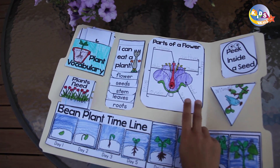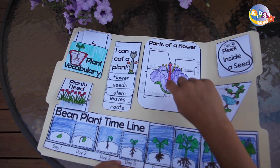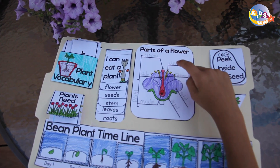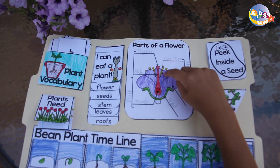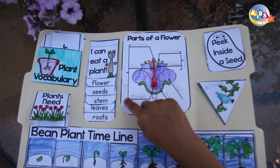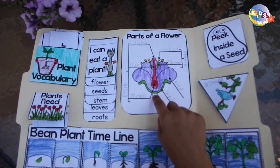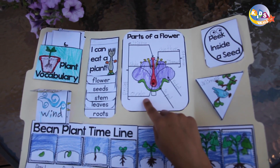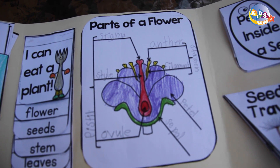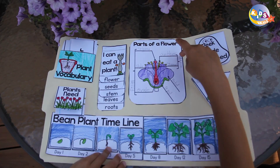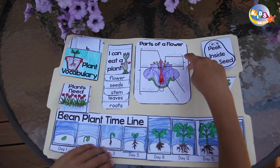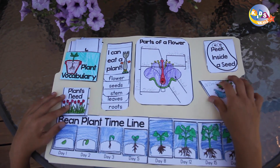Beside that, there's parts of a flower. This is the stigma — the sticky part — the style, the filament, the anther, the pistil, the ovule, the seed petal, the stamen. And that's parts of a flower.